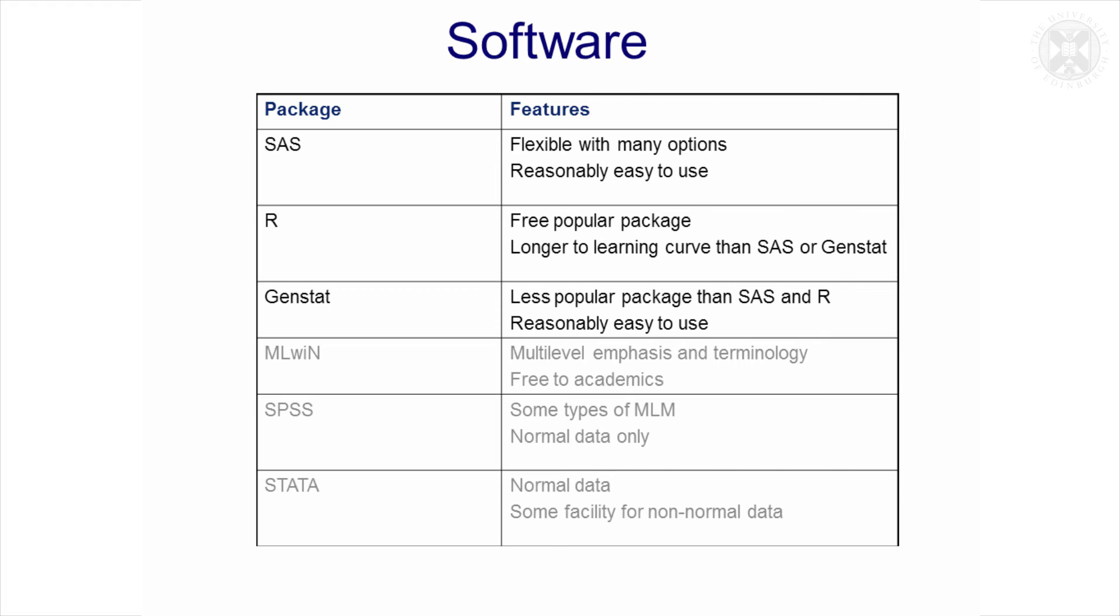So in terms of software, this is just the same slide as I gave for the mixed model presentation a few weeks ago, and I've just highlighted some of the packages that are available freely in the Roslin Institute that will do mixed models if you want to experiment with these. So SAS is quite a flexible package, reasonably, well I think it's reasonably easy to use. R is probably a more well-known popular package and it's freely available. It takes a little bit longer to learn than SAS, but if you already know R, there are some packages within it that will do mixed models, but they're not as thorough and don't have as many options as SAS. Genstat also has some good mixed model software in it, but I think that's probably a less popular package than either R or SAS, but it's reasonably easy to use.